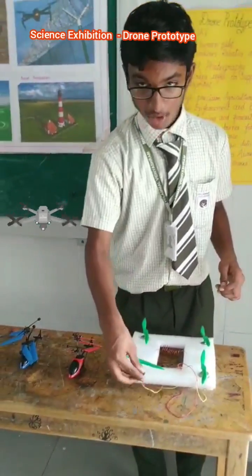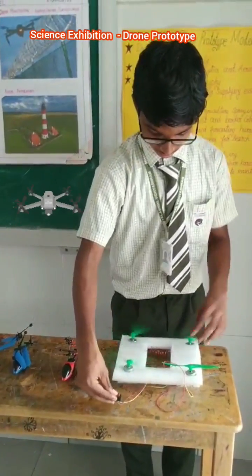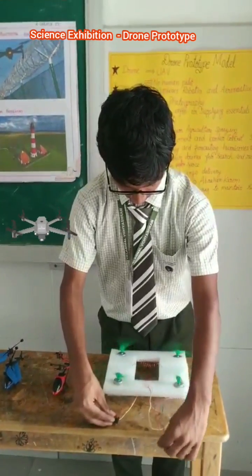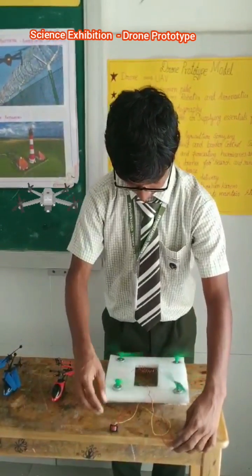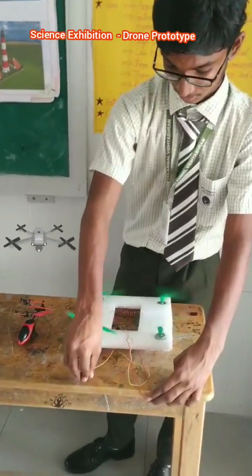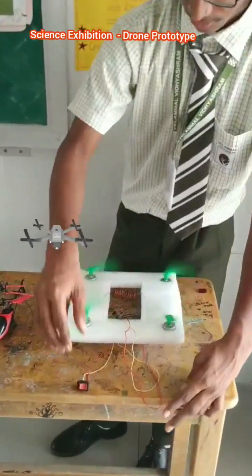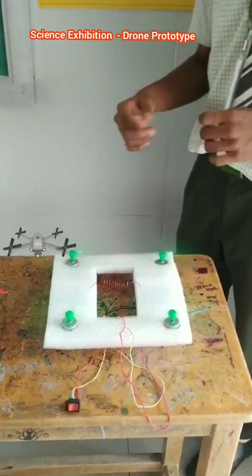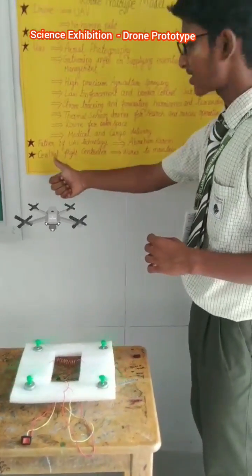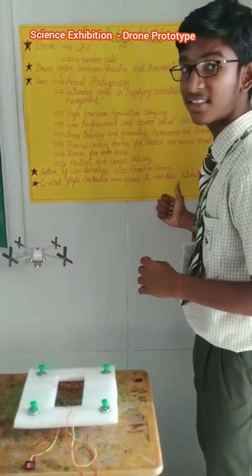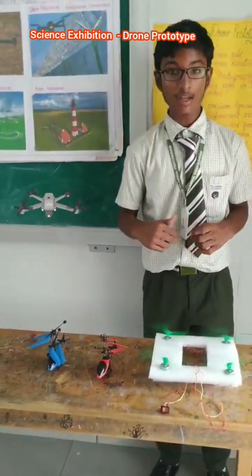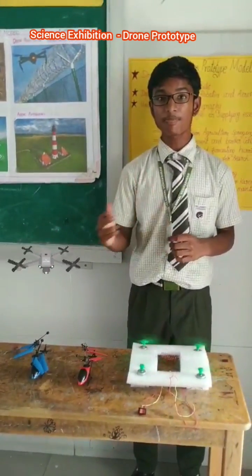So now I am going to turn on my drone. These two rotate in opposite directions in order to maintain the stability of the drone. As I mentioned in my chart, the Central Flight Controller helps maintain the stability of the drone, and the drone gets information from the GPS system.